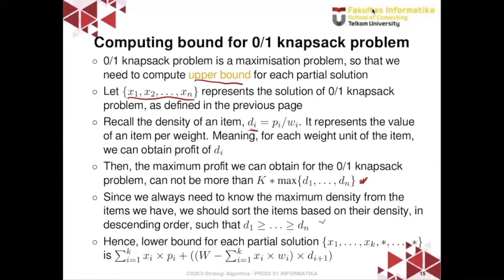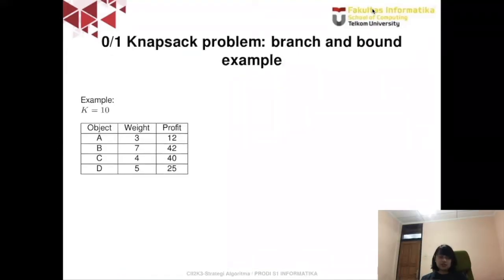For a partial solution where we have already determined xi for i equals 1 to k, the upper bound is computed as: the total profit obtained so far, plus the remaining capacity (k minus the current weight) multiplied by the largest density among the remaining items. Since items are sorted by density in descending order, the next item always has the largest remaining density, so we multiply by the density of the next item.